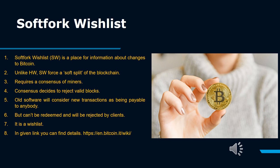Soft Fork Wishlist, SW, is a place for information about changes to Bitcoin. Unlike HW, SW forces a soft split of the blockchain. It requires a consensus of miners. Consensus decides to reject valid blocks. Old software will consider new transactions as being payable to anybody, but they can't be redeemed and will be rejected by clients. It is a wishlist. Details can be found at the given link.